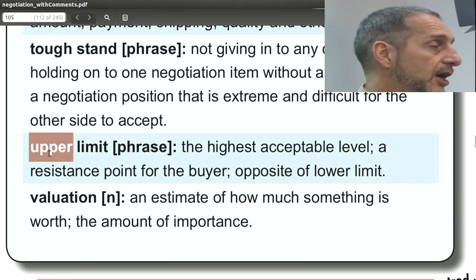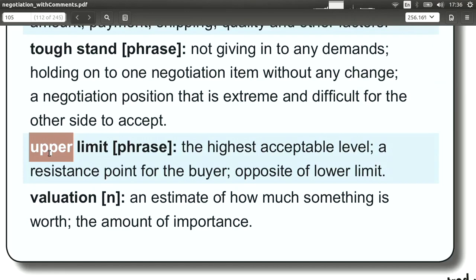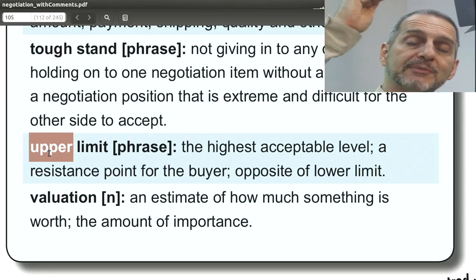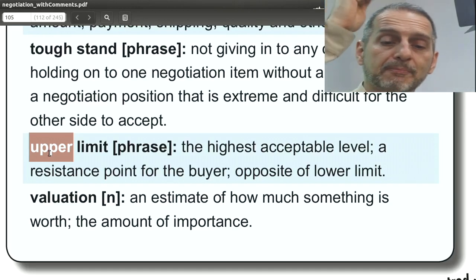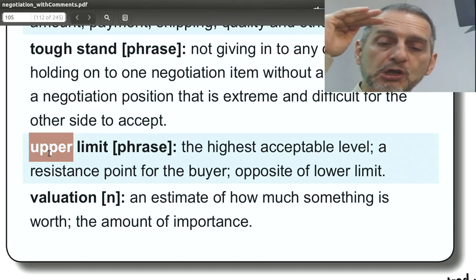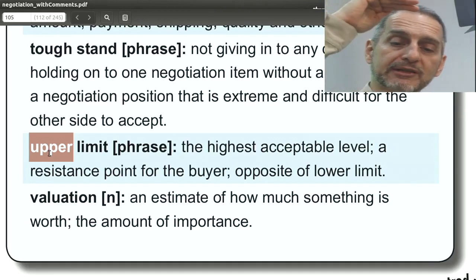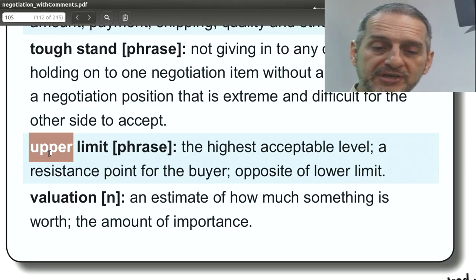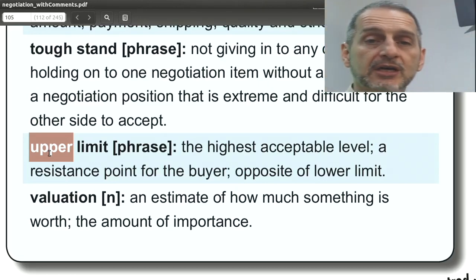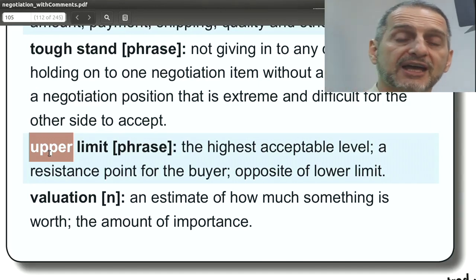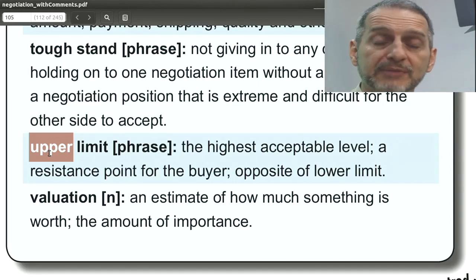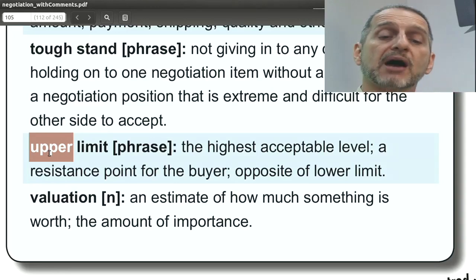Upper limit — limit, of course, means you cannot go past that. Upper means on the top side. The upper limit means I cannot accept a deal that goes above that. As opposed to lower limit: upper limit means cannot go above this, lower limit means cannot go below this. You use this in your negotiation very normally — you'll tell the other side, that's my upper limit. Seventy dollars is my upper limit.